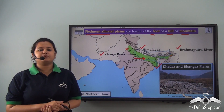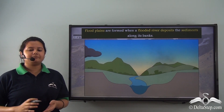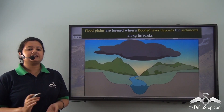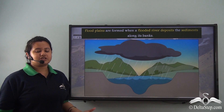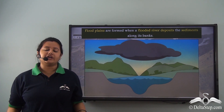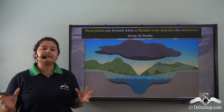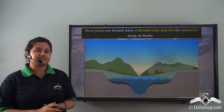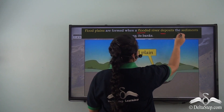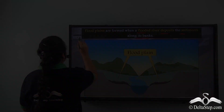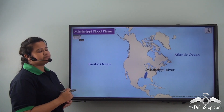Now there is another type of alluvial plain — the floodplain. A floodplain is formed when a river gets flooded due to torrential rainfall and overflows, leading to flooding of adjoining areas. When the rainfall stops, the water gradually recedes and deposits sediments along both sides of its banks, forming floodplains. An example of a floodplain is the Mississippi River floodplain.